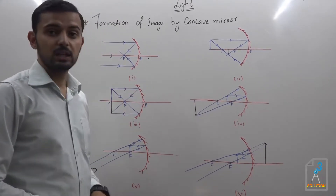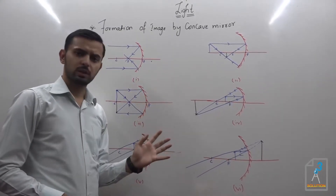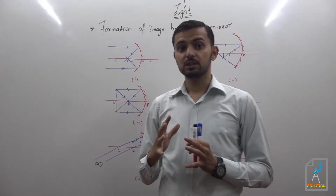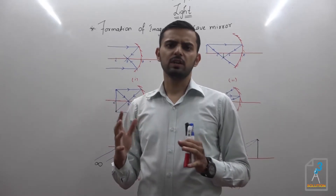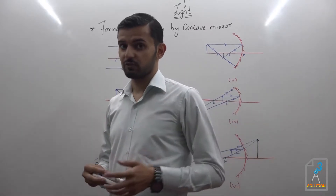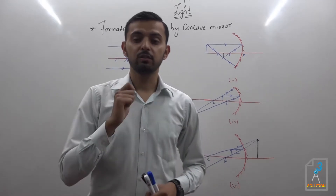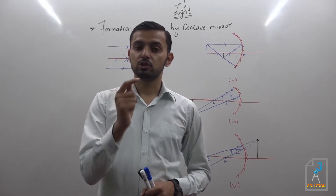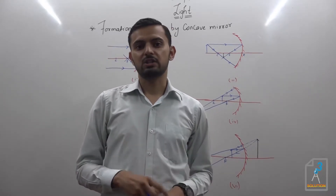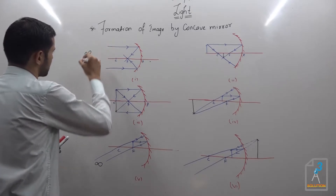Now we are going to study the formation of images by the concave mirror. We can see a bunch of six diagrams here — these are the basic conditions under which the concave mirror produces very different images depending on the position of the object. During your childhood you might have played this game: when you change the position of a spoon, you see your image inside it looking very different.